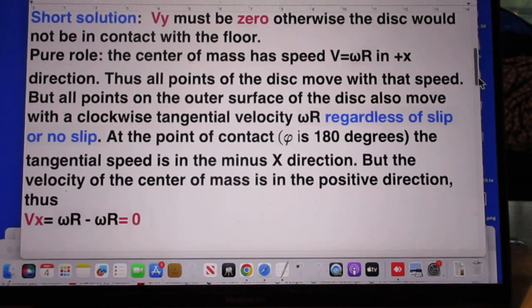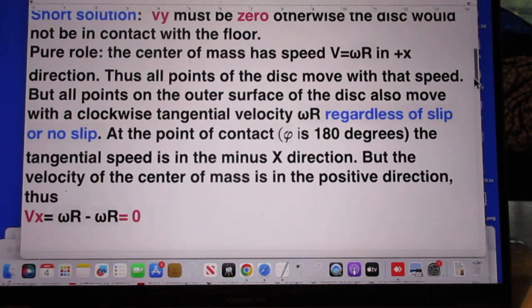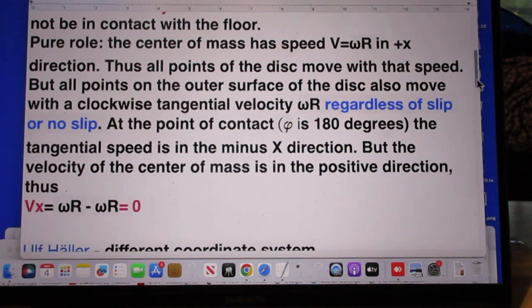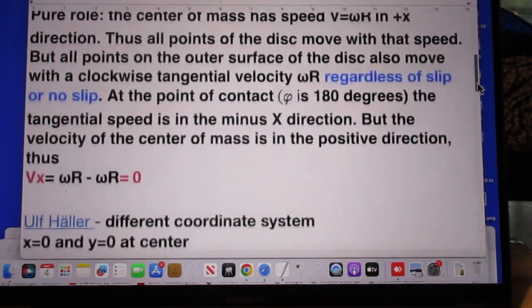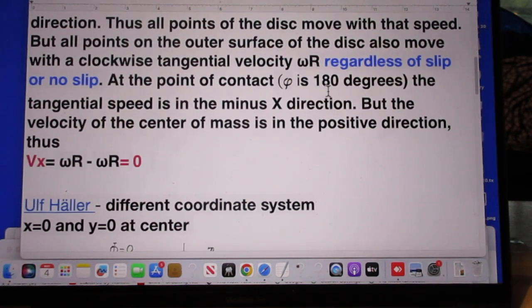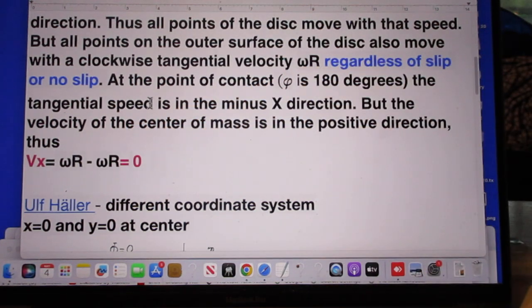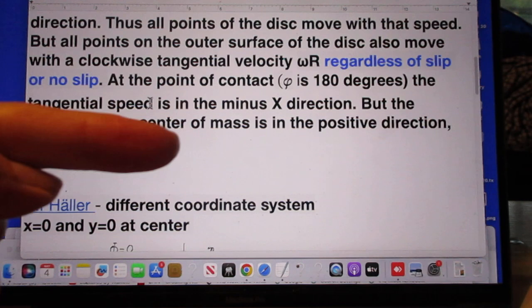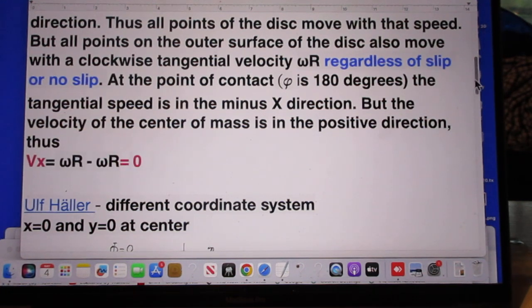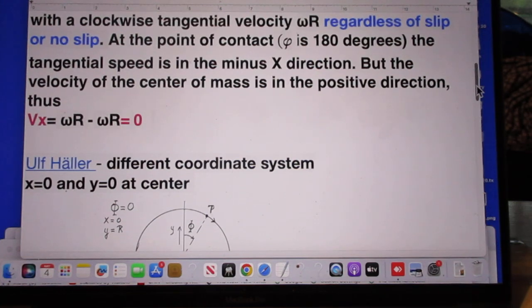But all points on the outer surface of the disc also move with a clockwise tangential velocity, omega r. That's regardless whether there is slip or no slip. In other words, at the point of contact, where phi is 180 degrees, the tangential speed is in the minus x direction, but the velocity of the center of mass is in the positive direction. In other words, Vx is omega r minus omega r, which is zero. So that's the short solution.